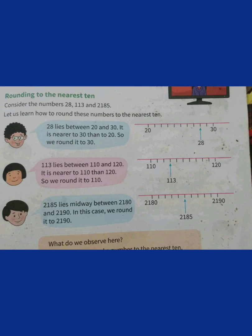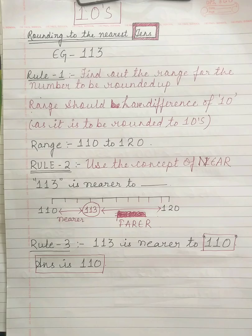Let us see some more examples. The example is 113. As it is told to find out the rounding to the nearest tens, we have to find the range that has a difference of 10. So, the range is 110 to 120. Using the concept of near, 113 is nearer to 110 and not 120. So, 113 can be rounded to 110.